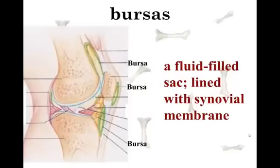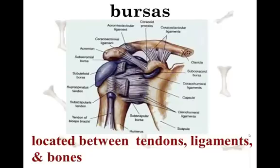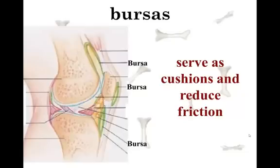A bursa is another type of fluid sac — like little fluid pillows. They're lined with the synovial membrane and are filled with fluid, acting as shock absorbers. They're often found between muscle and ligaments, and muscle and tendons. Here are three of them outlined in green in your knee, and you can also see the large bubble-like ones in your shoulder. When a bursa gets inflamed, it causes a disorder known as bursitis — an inflammation of one or more of the bursa. They serve as a cushion, reduce friction, and act as shock absorbers.